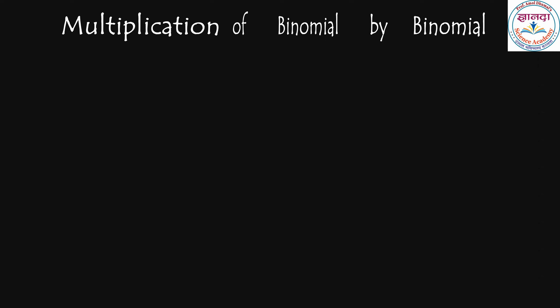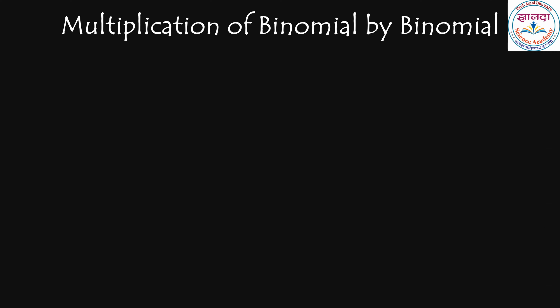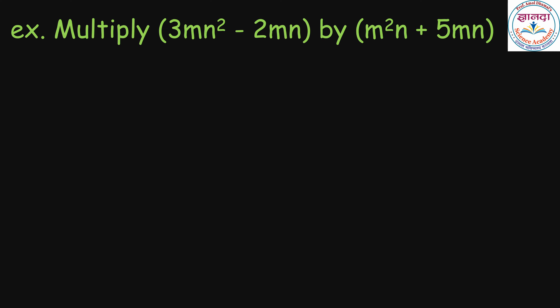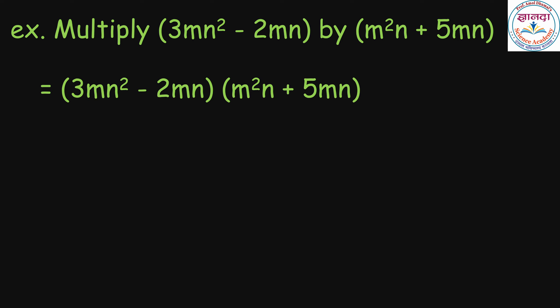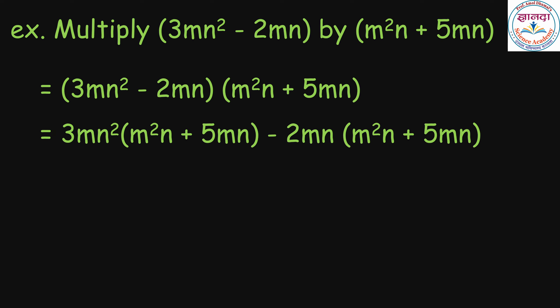Let us discuss another example of multiplication of binomial by binomial: bracket 3mn square minus 2mn, multiplied by bracket m square n plus 5mn. Using the distributive property, we can write 3mn square multiplied by bracket m square n plus 5mn, minus 2mn multiplied by bracket m square n plus 5mn.